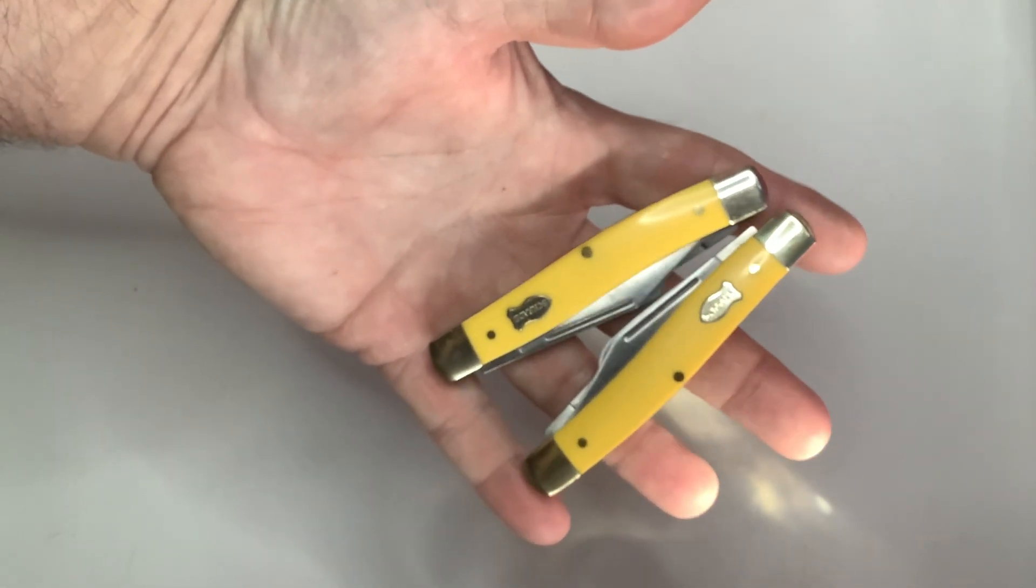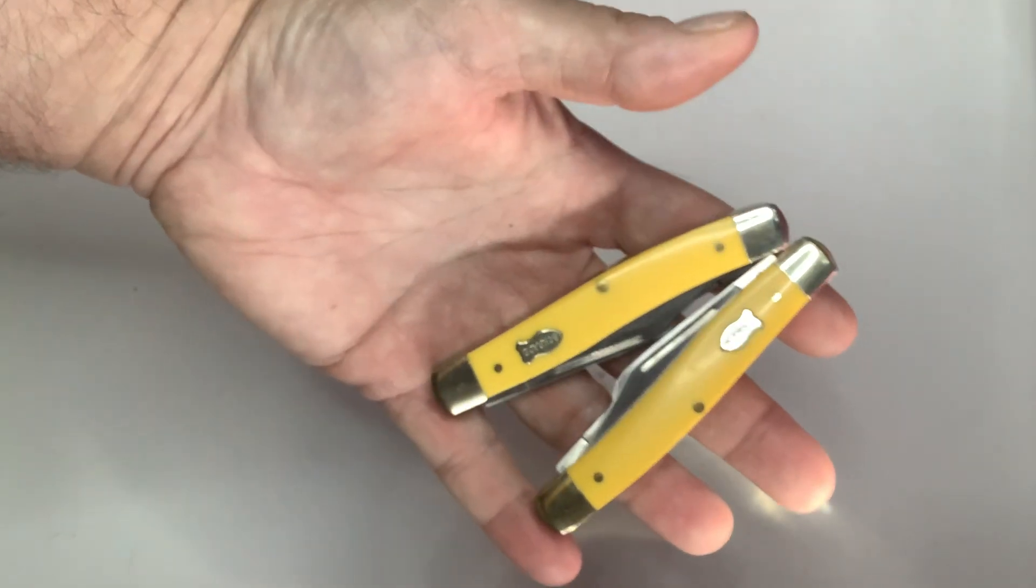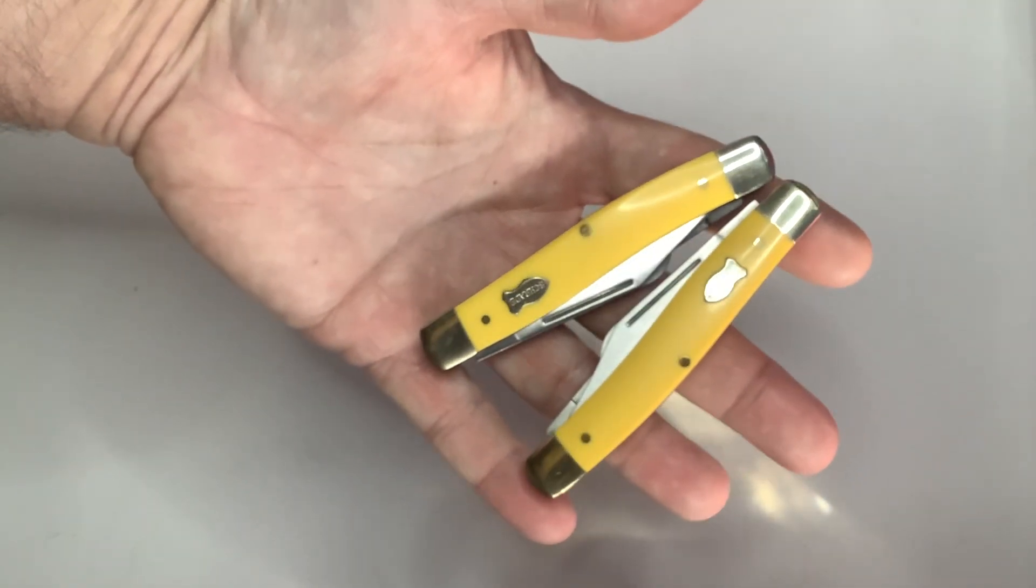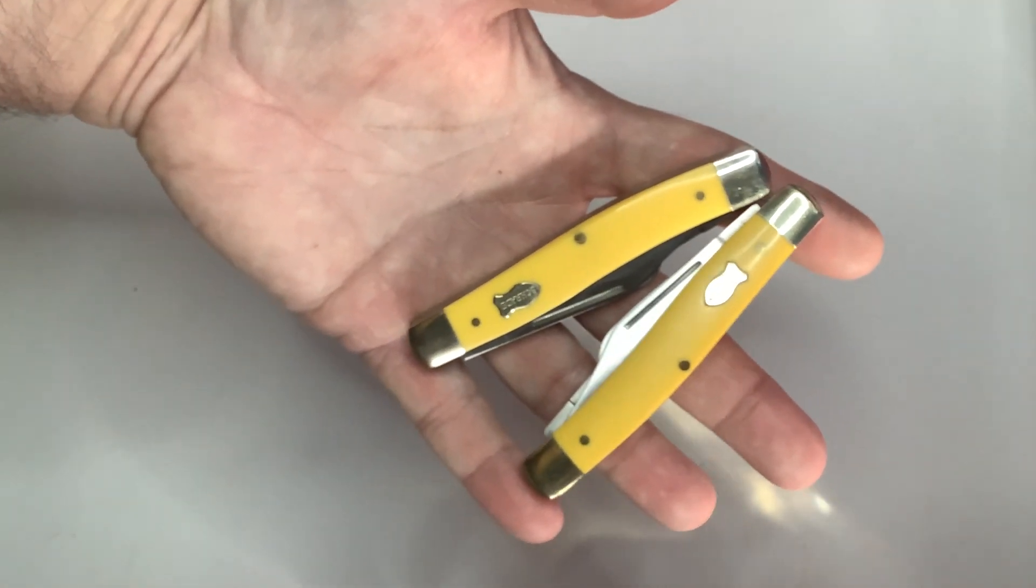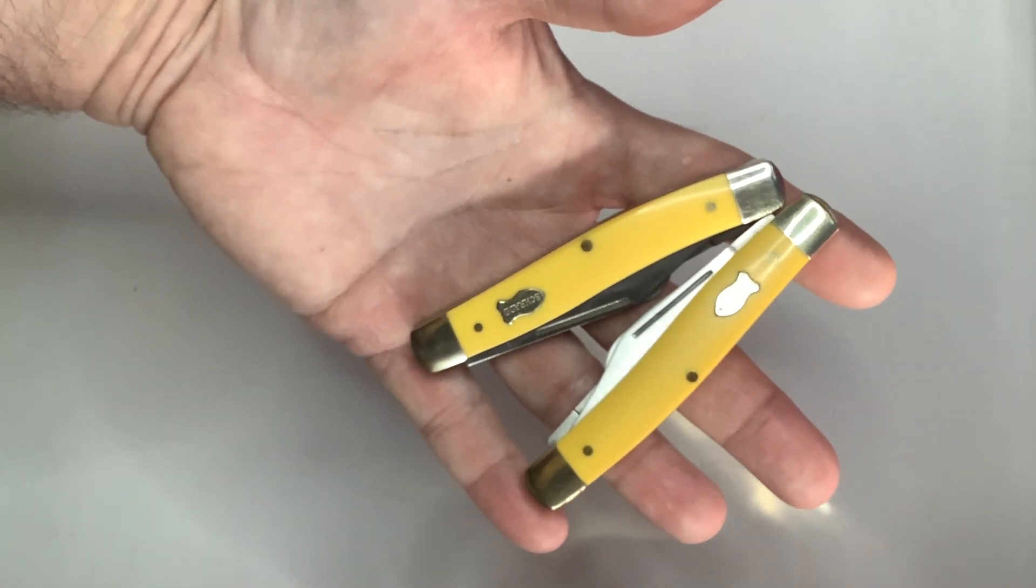Great buy on eBay, $3.99 each for the yellow Derlin Schrade stockman. Thank you everybody for checking them out, thank you for watching, thank you for the kind comments.